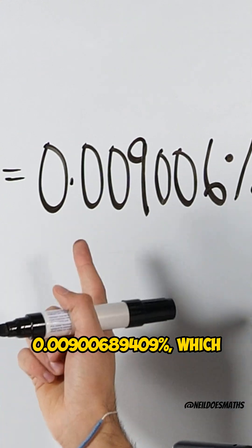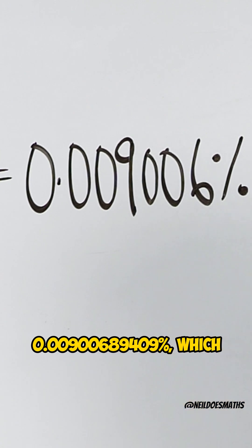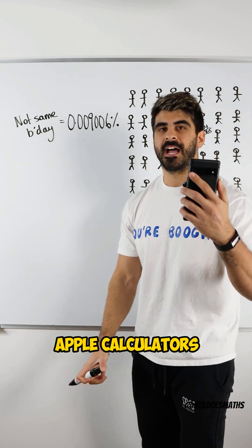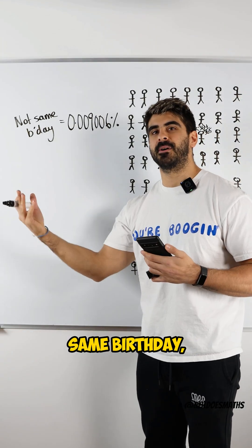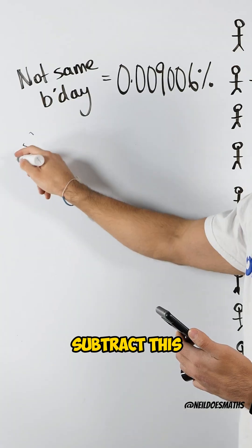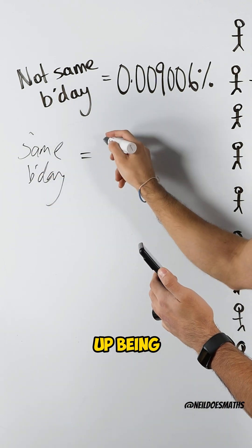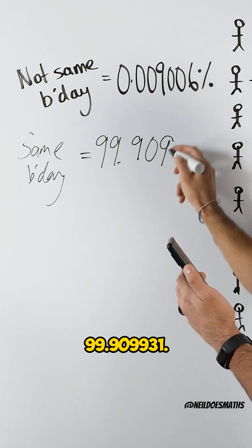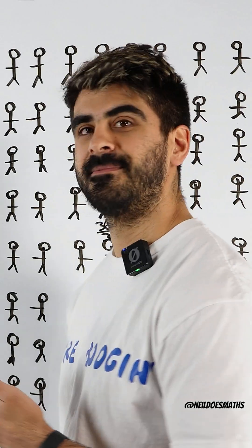When you do that multiplication, you end up with 0.00900689409%, which I computed on my Android phone. Apple calculators cannot handle this. So that's the probability of not sharing a birthday. To calculate the probability of sharing the same birthday, we just subtract this from 100%, which ends up being 99.909931%. Nice.